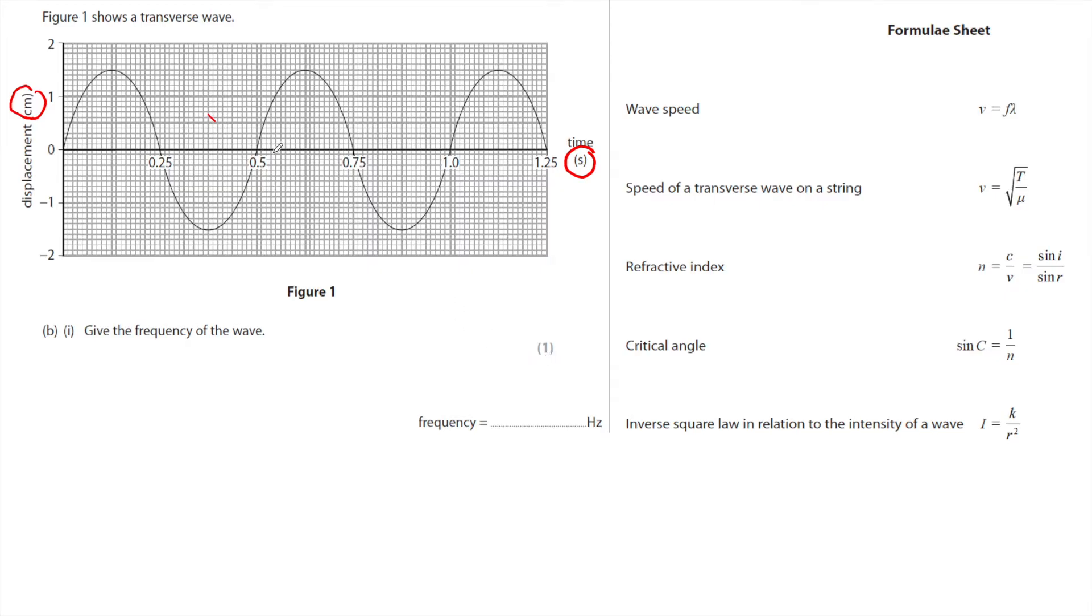So you've got to use figure one to do this, and of course frequency is the number of oscillations or number of cycles per second. And you can see that it takes 0.5 seconds for the wave to do one cycle, so that's the period, and of course therefore it will do two cycles in one second, so the frequency is two hertz.